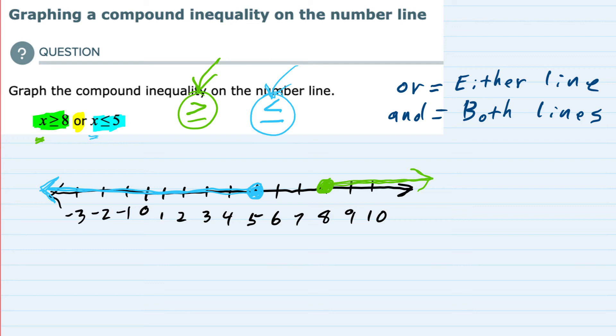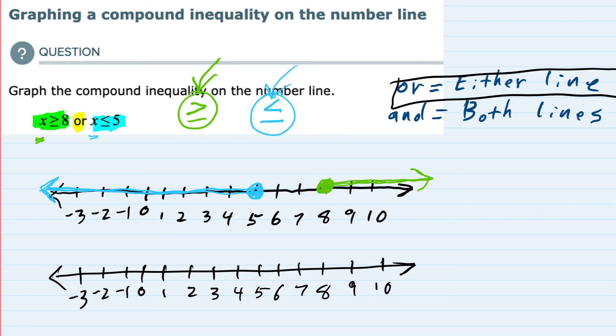Now that I've drawn each one individually, I want to think about the compound—the OR part. I've drawn another line. OR means it could be either of these two: points to the left of 5 including 5, or points to the right of 8 including 8. For OR, it could be either of these two lines, so I'm going to graph both of them. Any of the values in either region would satisfy this expression.